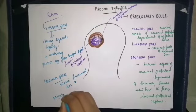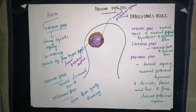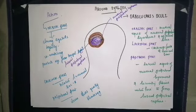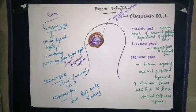The palpebral part also helps in closure of the eyelids but produces gentle closure, and is responsible for blinking. In summary: the orbital part produces tight closure, the palpebral part produces gentle closure and blinking, and the lacrimal part dilates the lacrimal sac and supports the lower eyelids.